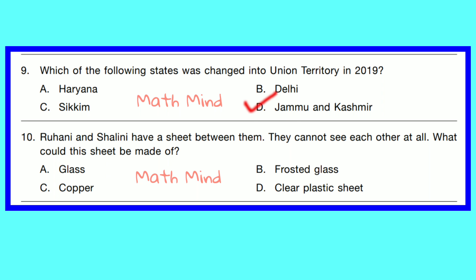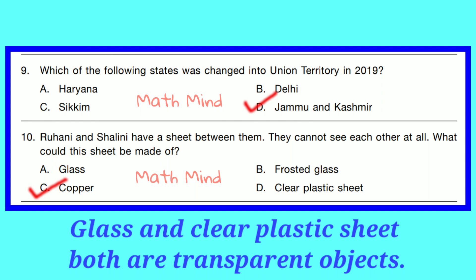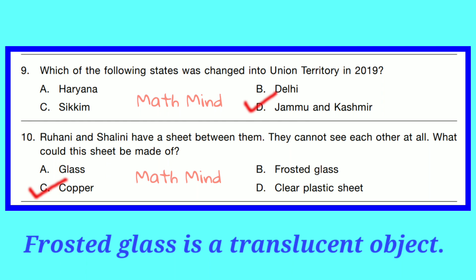Question No. 10. Ruhani and Salini have a seat between them and they cannot see each other at all. What could this seat be made of? They cannot see each other, so this is an opaque object. Option C is correct — Copper. Copper is a metal which is opaque. Option A, Glass, and Option D, Clear plastic, are both transparent objects through which we can see a clear image. Option B, Frosted glass, is a translucent object through which we can see only a partial image.